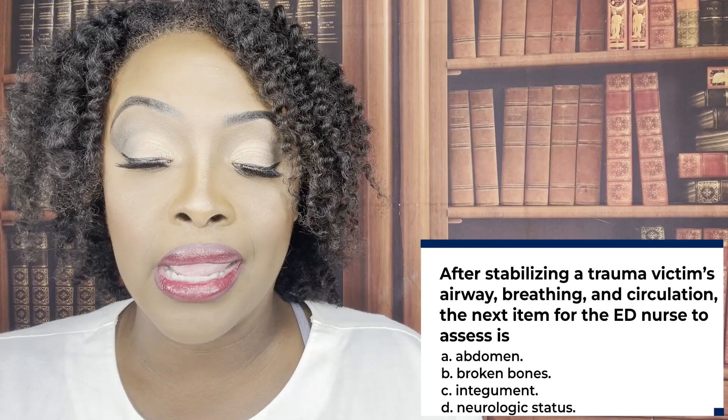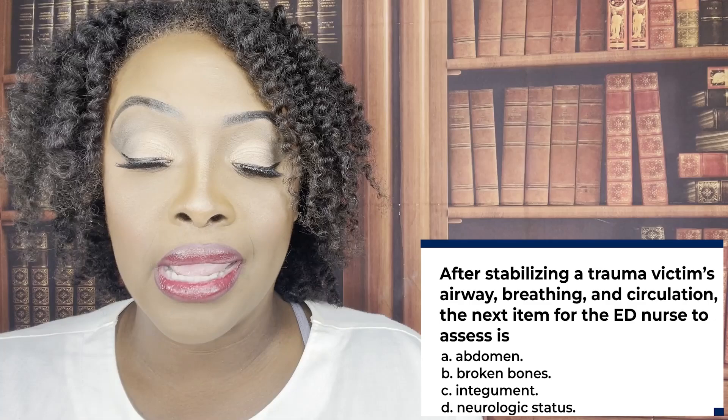After stabilizing a trauma victim's airway, breathing, and circulation, the next item for the emergency department nurse is to assess: A, abdomen; B, broken bones; C, integument; or D, neurological status.